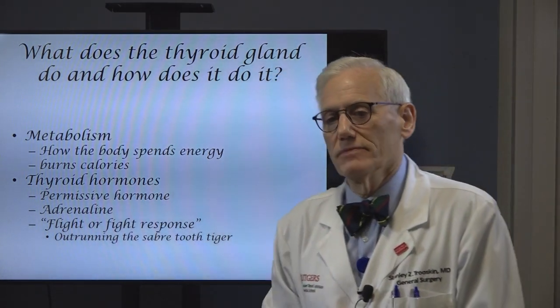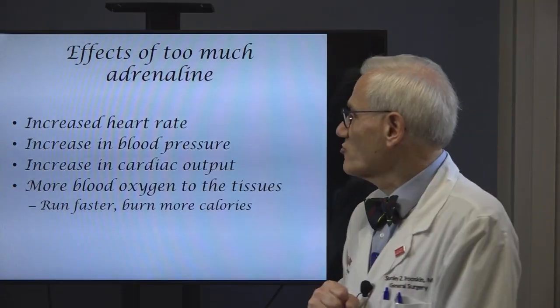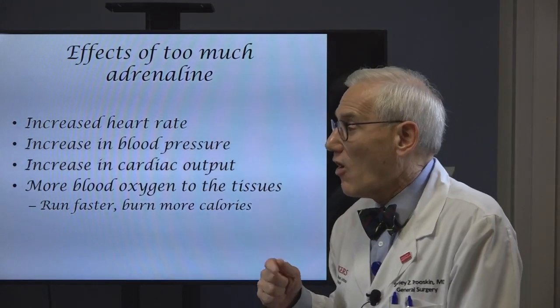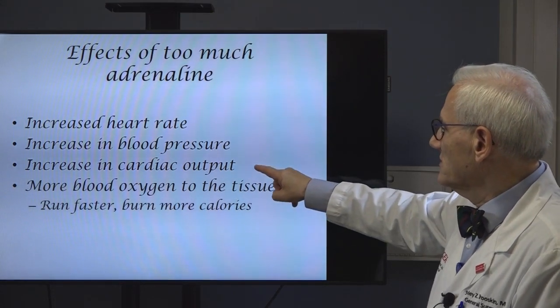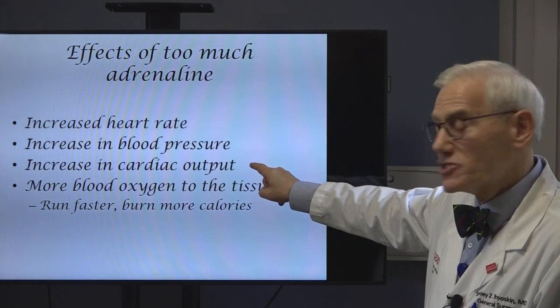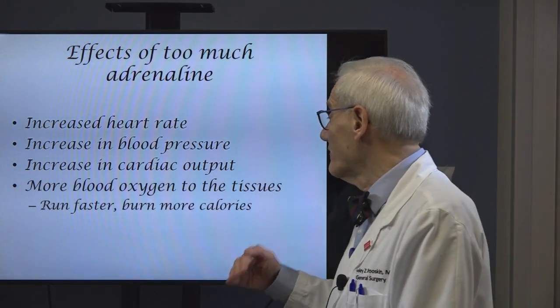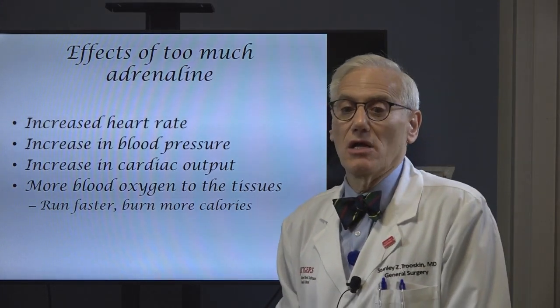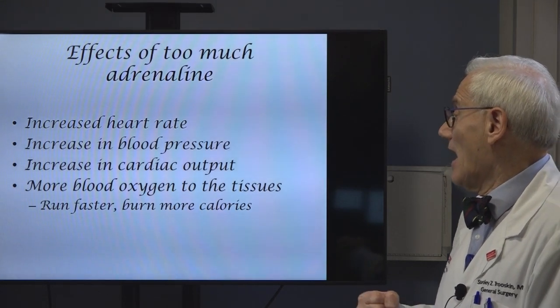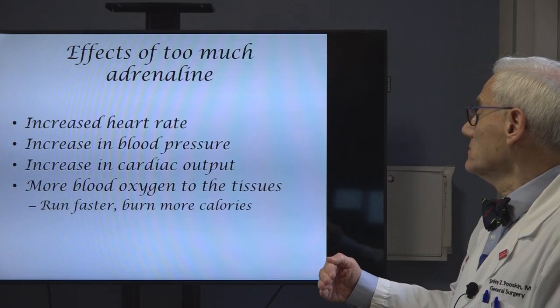Adrenaline minute to minute is responsible for what's called the fight or flight response. You're a prehistoric man or woman. The saber tooth tiger starts to come after you and you start to run. Your brain is going to appreciate the danger and send a signal both through nerves and through hormones to your adrenal glands, and a bolt of adrenaline is going to be released. Adrenaline is going to increase your heart rate, increase the blood pressure, increase the strength of how your heart pumps with each beat. The end result is more oxygen is delivered to the tissues, your muscle can contract faster and stronger, and you're going to try to outrun the saber tooth tiger — and as you do that, you're going to burn more calories.